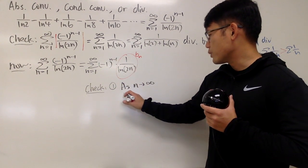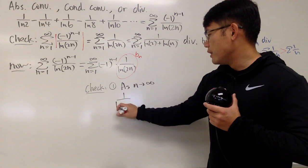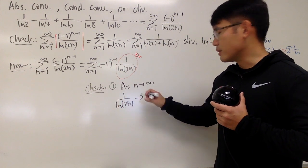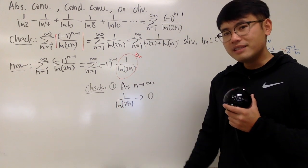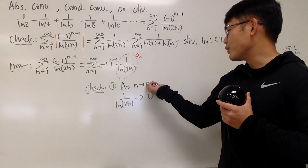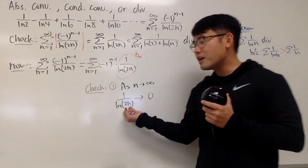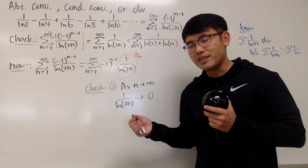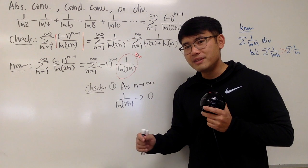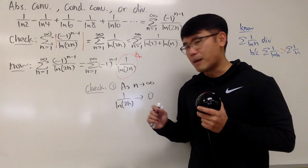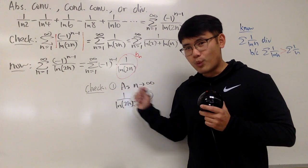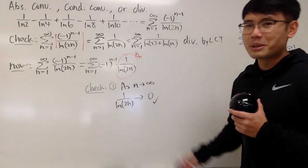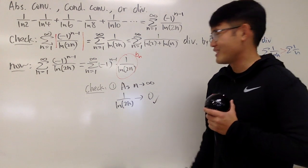We look at 1 over natural log of 2n — does this go to 0? Yes, it does, because when you put infinity in, 2 times infinity is infinity, natural log of infinity is infinity, that's in the denominator, and 1 over infinity is 0. So this first condition gets a check mark.